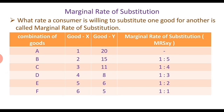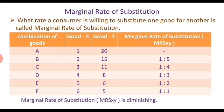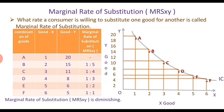To gain an additional X in combination B, the consumer is willing to give up 5 Y goods. In combination C, the consumer is willing to give up only 4; next 3; next 2; and next is 1. So the marginal rate of substitution is diminishing.